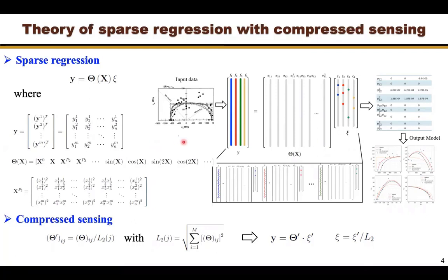This process can be summarized with this figure. We first collect input data and then feed the data into the sparse regression with compressed sensing model. This model can find the most important features that govern the data, and based on these features, we can output the model we are interested in. The process to find the coefficients matrix is closely related to compressed sensing. Compressed sensing normalizes the theta matrix to ensure the restricted isometry property. In this study, we normalize the candidate functions by L2 norms, computed with this equation.